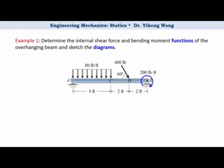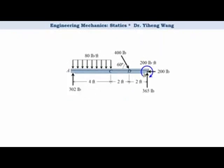We have already learned the method of sections. Therefore, we will cut the member at an arbitrary location x, and apply the method of sections to write the shear force and bending moment as expressions of x. So the first thing we do is to complete the free body diagram of this member by determining all the external support reactions and marking them on the member.